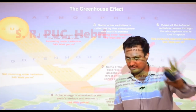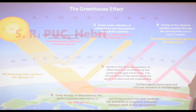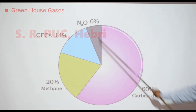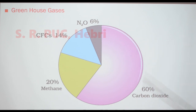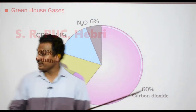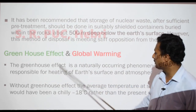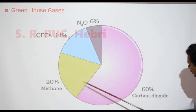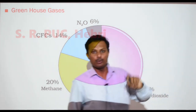The greenhouse effect is very much essential for the survival of all living organisms on earth — so greenhouse effect is not bad, remember this. Moving on to greenhouse gases and their composition: carbon dioxide makes up around 60 percent, methane 20 percent, CFCs (chlorofluorocarbons) 14 percent, and N2O (nitrous oxide) 6 percent. The composition of greenhouse gases is an important topic for examinations.